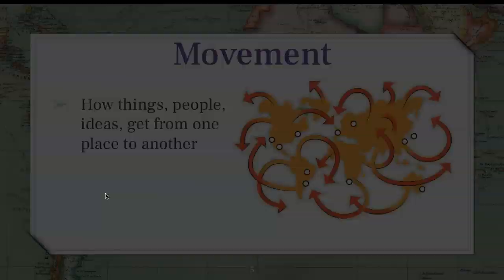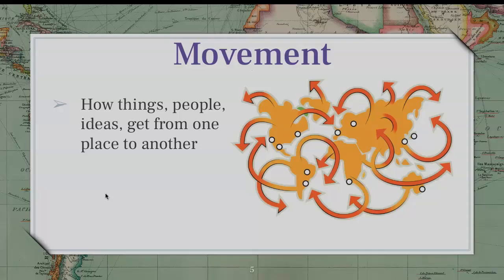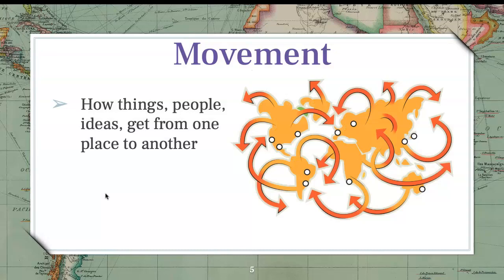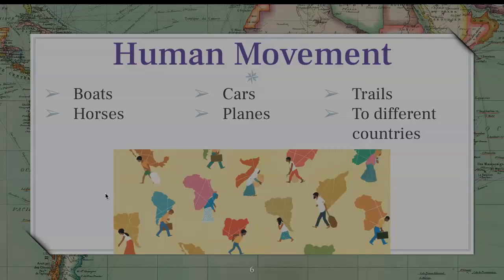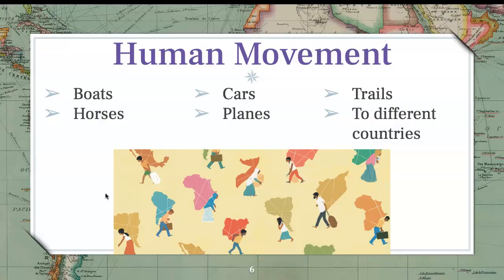The first theme is movement. When we look at the movement theme, it addresses how things, people, and ideas get from one place to another. An example of movement would be human movement. Currently in today's world, we move in cars, planes, and boats to different countries. Back in the day, when we'll be studying, people used boats, horses, and walking trails, and they moved to different countries or empires as well.